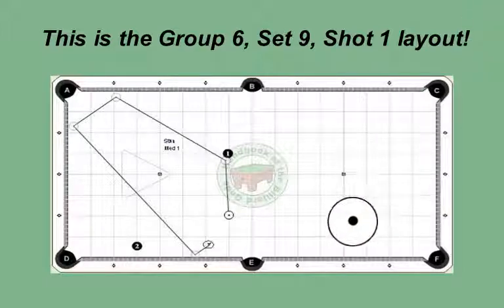Stun off the one ball rolls the cue ball on the tangent line. With natural roll, the ball goes into and out of the corner, back into the large comfort zone for the two.